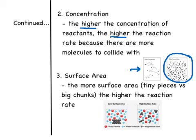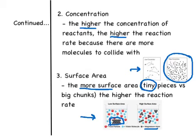The third factor for increasing or decreasing reaction rates is surface area. The more surface area you have — think tiny little pieces — the higher the reaction rate. If we are reacting magnesium atoms and we have a big chunk, it's not going to react as quickly as if we have little chunks in suspension. The tinier the pieces, the quicker the reaction rate; the bigger the chunks, the slower the reaction rate.